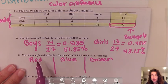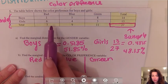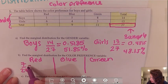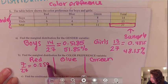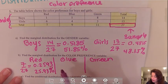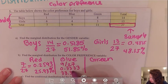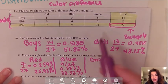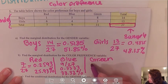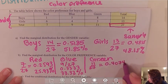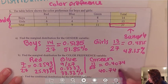If I want the marginal distribution for the color red, I'm going to look at the total red which is 7 out of 27 — that is about 0.2593, which is 25.93%. For blue, that would give us 9 out of 27, which is about 0.3333 or 33.33%. And for green, that would be 11 out of 27, which gives us about 0.4074, which is 40.74%.